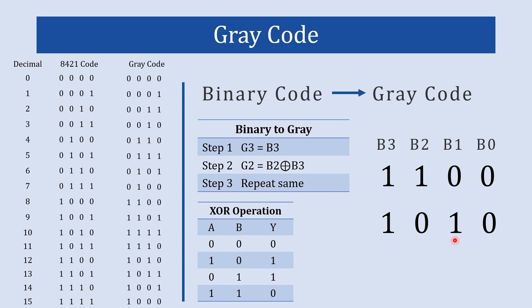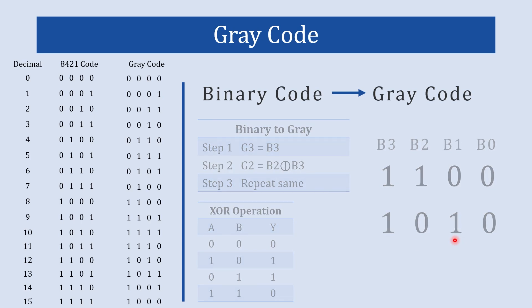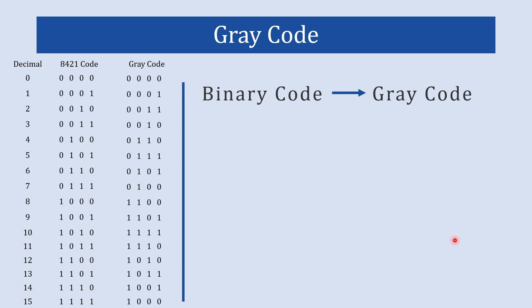That is how you convert binary code into gray code. Now there are two quick questions for you — pause the video and convert these two binary numbers into gray code. Write your answers in the comments and I will verify and respond to you whether they are correct or not. Once you are done, we will move forward.